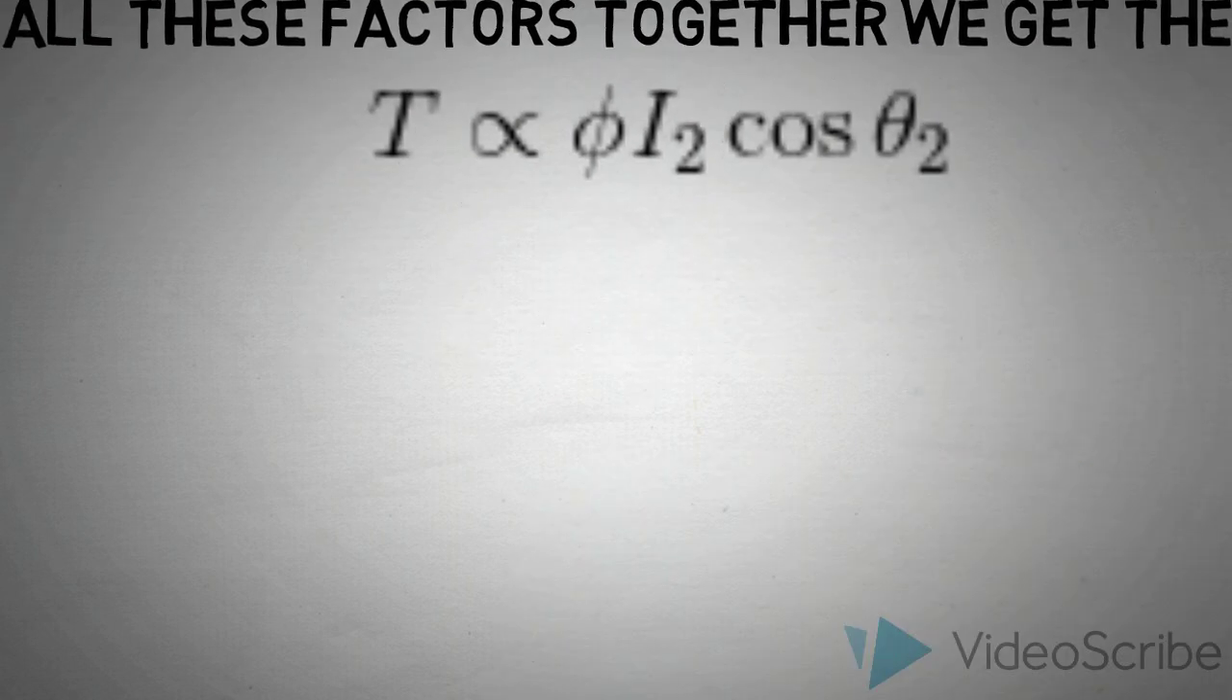So now let us calculate the value of all these 3 factors individually for having an accurate formula of our torque. So by Ohm's law we can easily find that I2 is equal to S E2 upon square root of R2 square plus S X2 square.